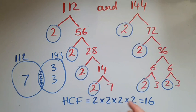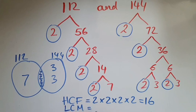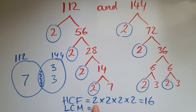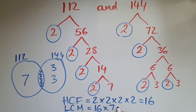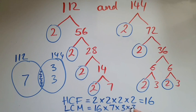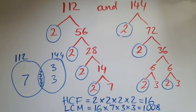What about the lowest common multiple? That's going to use everything inside the Venn diagram: 2 times 2 times 2 times 2, which is 16, times 7 times 3 times 3. That gives us 1008.